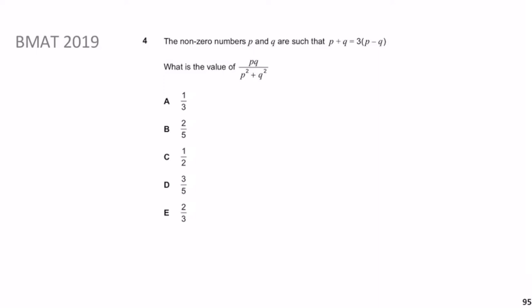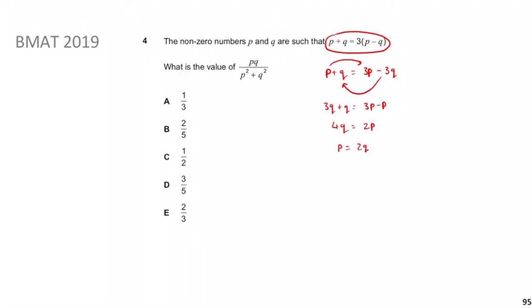Welcome back. The first obvious thing to do is just expand and work with this equation. So I expand to get p + q = 3p − 3q. Then I bring all the p's to one side and all the q's to the other side: 3q + q = 3p − p, meaning 4q = 2p, therefore p = 2q. So I have p expressed in terms of q.